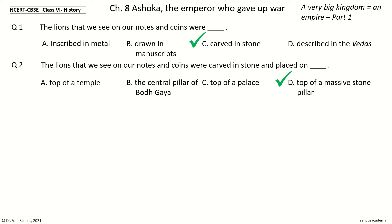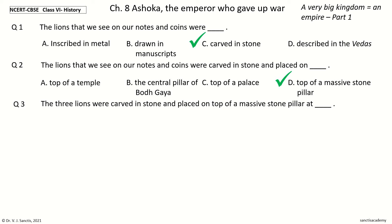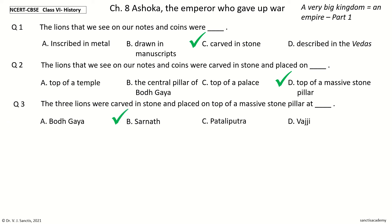Question 3: The three lions were carved in stone and placed on top of a massive stone pillar at — dash. The options are: Bodhgaya, Sarnath, Pataliputra, Vajji. The answer is Sarnath. So the three lions were carved in stone and placed on top of a massive stone pillar at Sarnath.